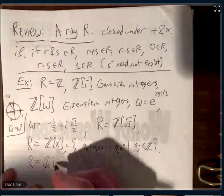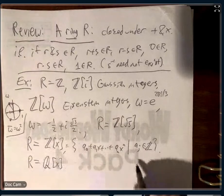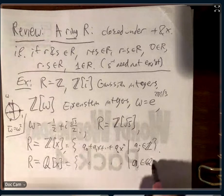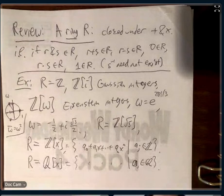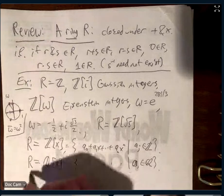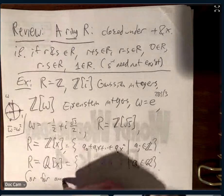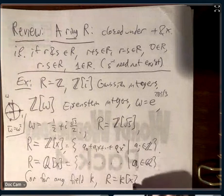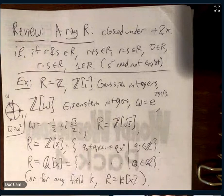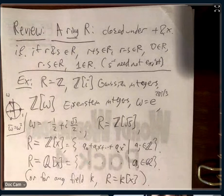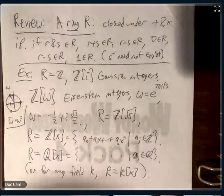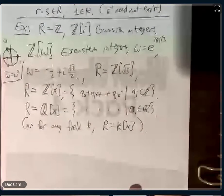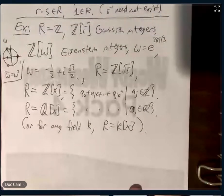Another example: Q[x] — the same as Z[x] except the coefficients aⱼ are now rationals. That ring has a very nice property. In general, for any field k you can take the ring of polynomials with coefficients in k — written k[x].